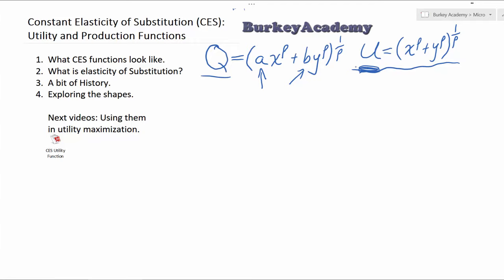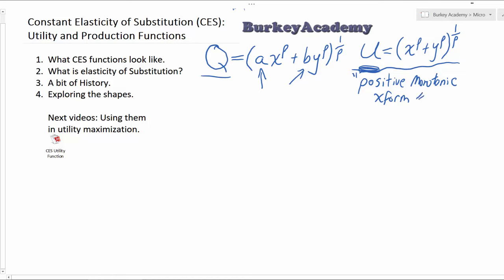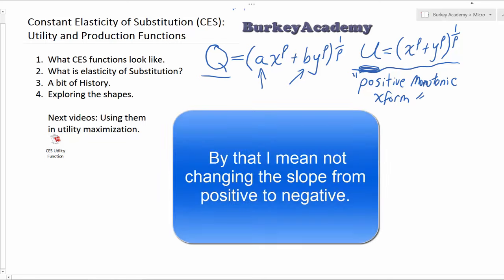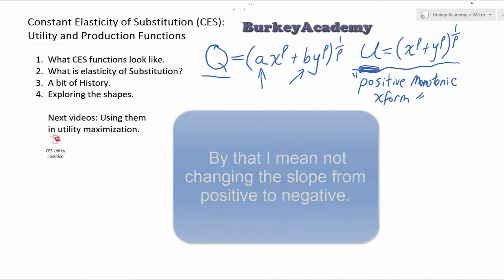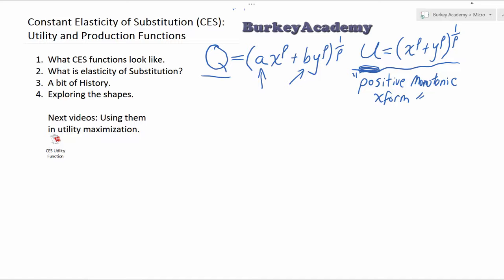Relative amounts of utility is what's really important. And so if you have any utility function and you give it what we call a positive monotonic transformation — positive monotonic transformation means that you're not changing the slope or scale, and higher levels of utility on the original scale are still going to be higher on the new scale — it's going to give you exactly the same preferences.